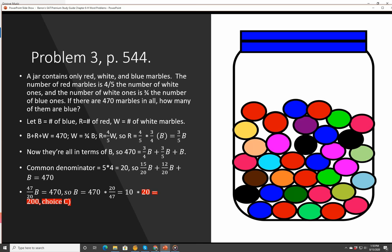Problem 3, page 544. A jar contains only red, white, and blue marbles. Sorry, couldn't find a drawing online that had just red, white, and blue. The number of red marbles is 4 fifths the number of white ones, and the number of white ones is 3 quarters the number of blue ones. If there are 470 marbles in all, how many of them are blue?